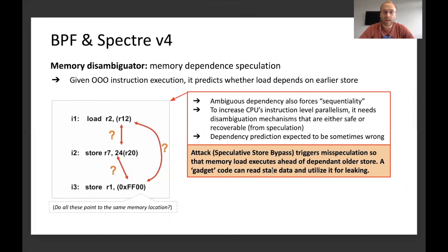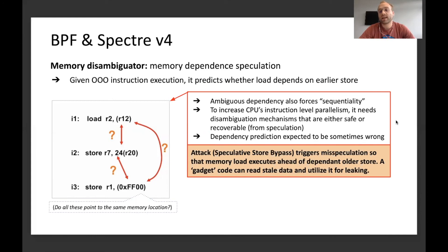Now going to the Spectre V4 case. Spectre V4 basically attacks the memory disambiguator, which speculates on memory dependency. Consider out-of-order execution on CPUs — it predicts whether a particular load depends on an earlier store. If the addresses are not known, the CPU doesn't always know whether they point to the same memory location, and it tries to predict. That prediction is expected to sometimes be wrong. An attacker triggers a misspeculation such that a load can overtake an actual dependent older store. With such gadget code, you can then read out stale data or out-of-bounds data and use it for leaking.